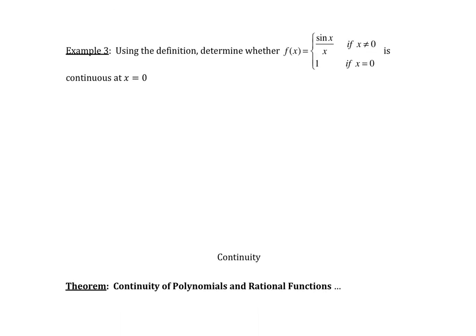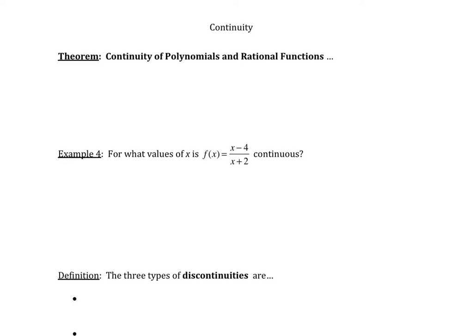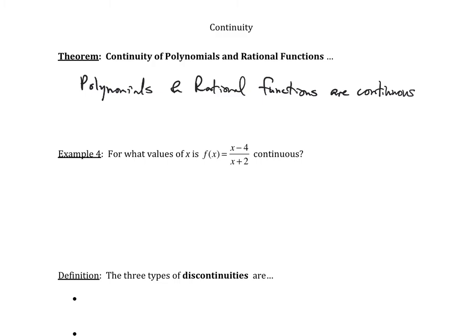Let me give you a few theorems about continuity. The first theorem involves polynomials and rational functions. Basically, our theorem says polynomials and rational functions are continuous on their domains. So any time you have a polynomial or rational function, continuity questions are basically domain questions.